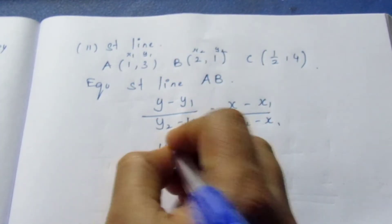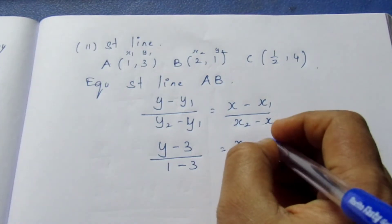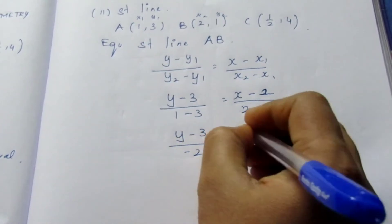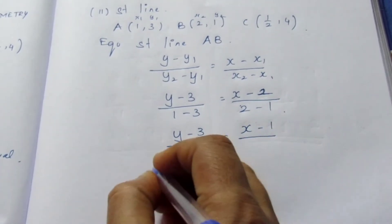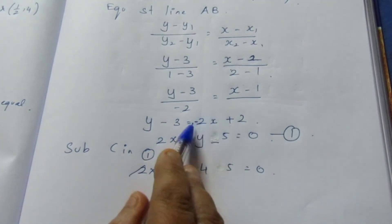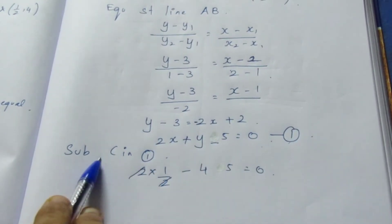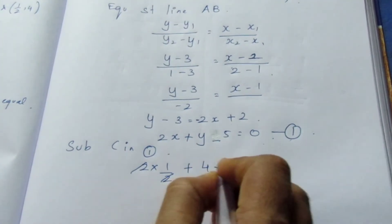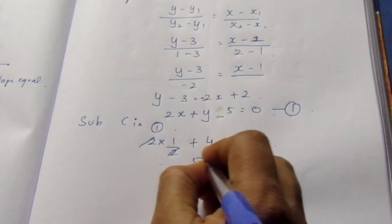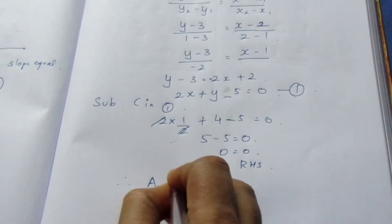Substituting: (y − 3)/(1 − 3) = (x − 1)/(2 − 1), which gives (y − 3)/(−2) = (x − 1)/1. Cross-multiplying: y − 3 = −2x + 2, so 2x + y − 5 = 0. Now substituting point C = (1/2, 4): 2(1/2) + 4 − 5 = 0, i.e., 0 = 0. LHS = RHS, therefore A, B, C are collinear.